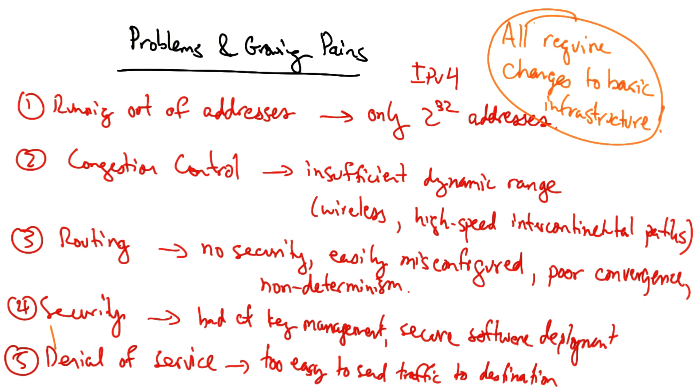Now, the thing that all of these problems have in common is that they all require changes to the basic infrastructure. And changing basic infrastructure is really difficult. It's not even clear what the process is to achieve consensus on changes. So, as we work our way through the course, it will be interesting to see the problems that we encounter in each of these areas, various solutions that have been proposed, and also to think about ways in which new protocols and technologies can be deployed.